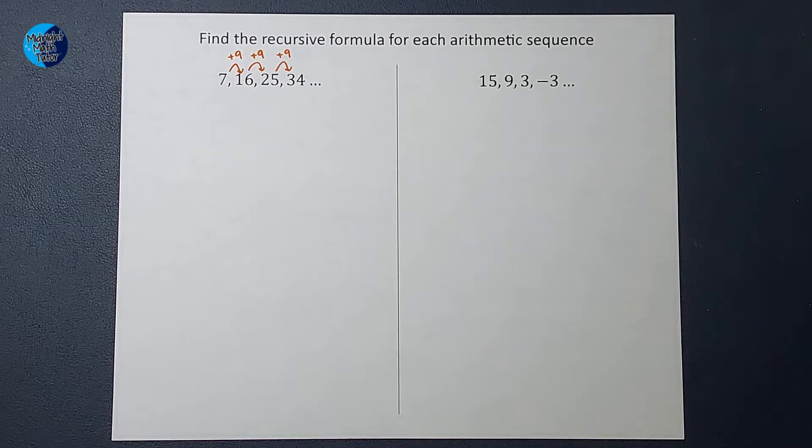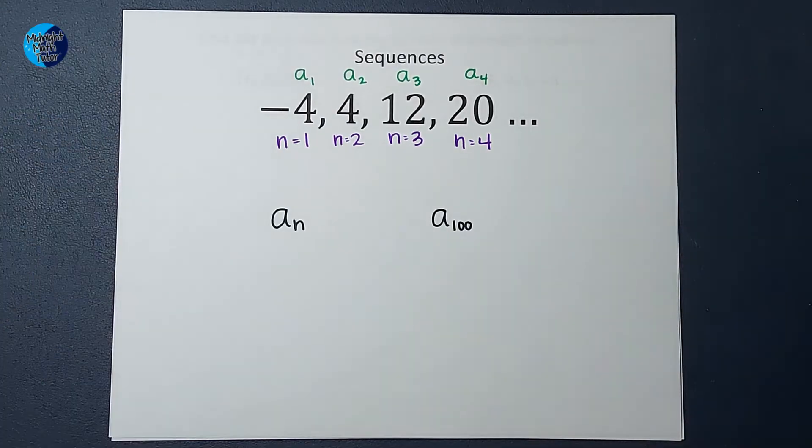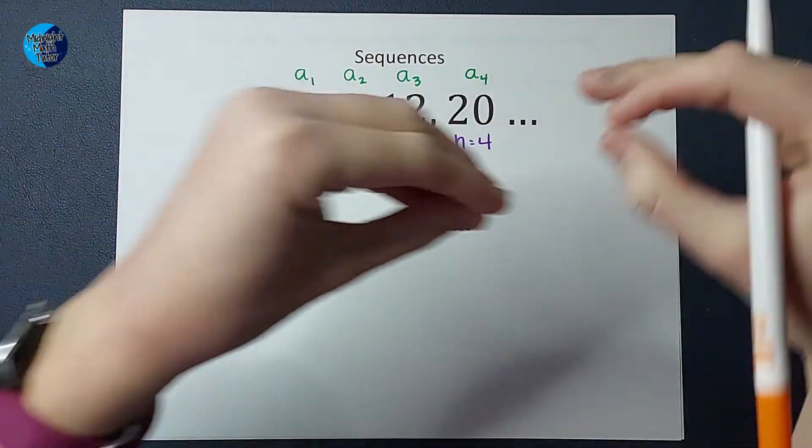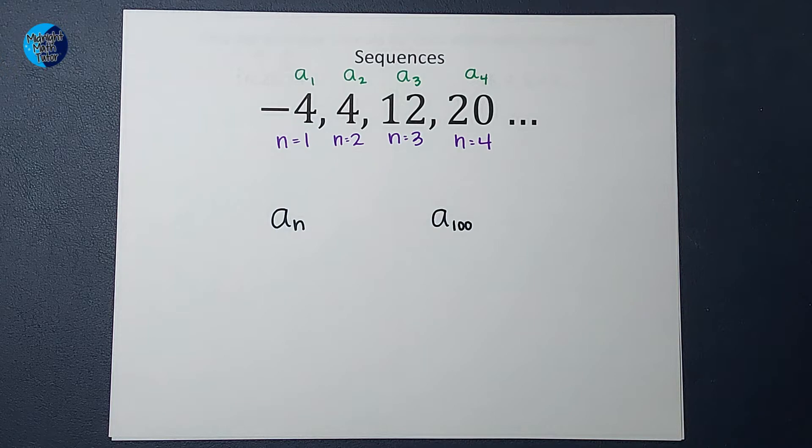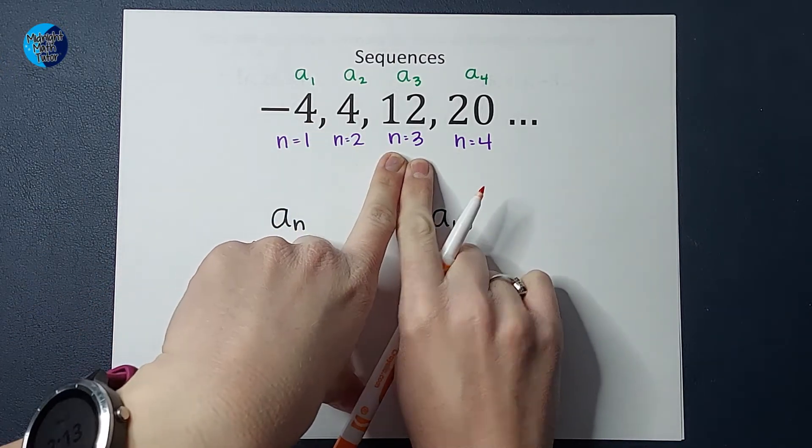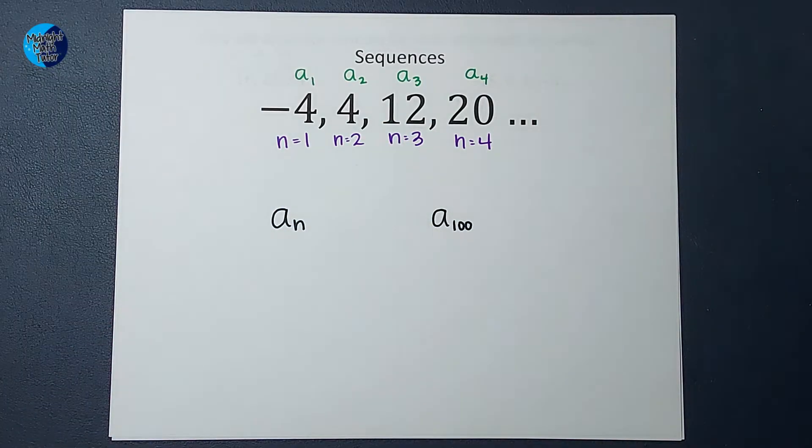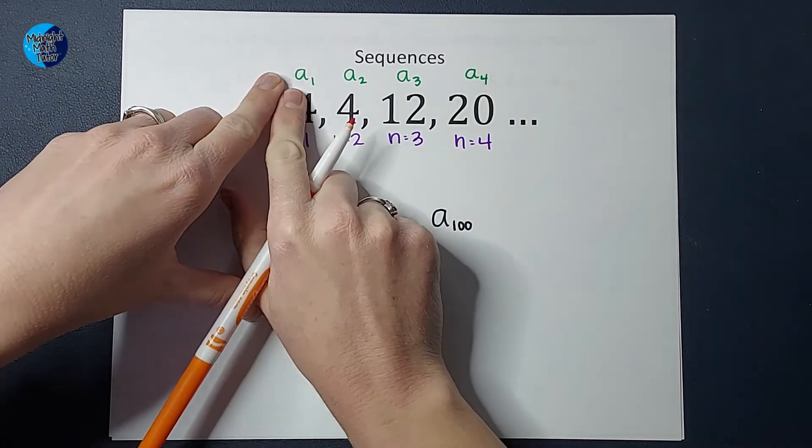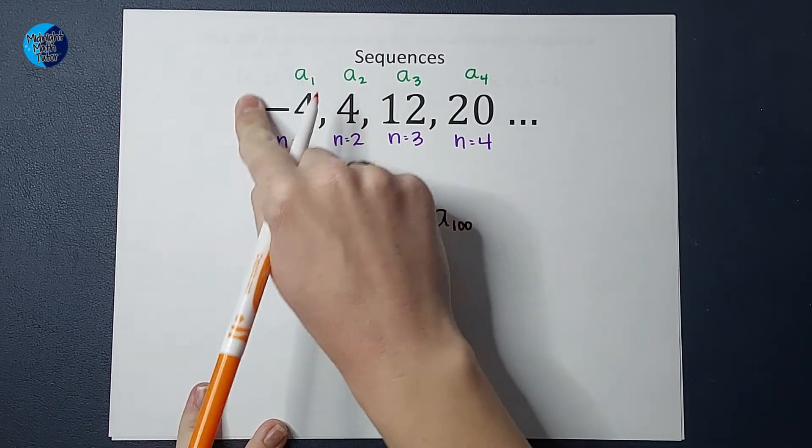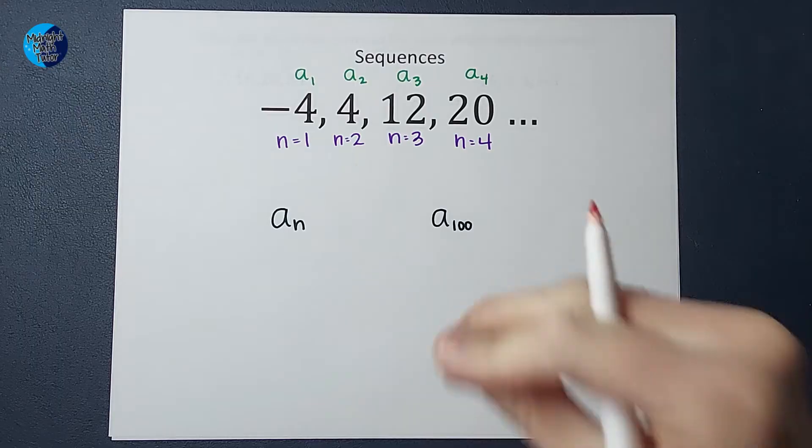We need to go over a little bit of notation terminology, and then it falls together quickly. When you're working with these, you'll see a lot of A's and N's. The N refers to the place in the sequence. N equals one is the first number in the sequence, N equals three is the third number, and so on. When you see A with a little subscript, A sub one, that's the value of that number.